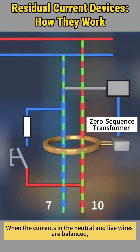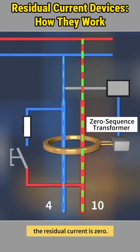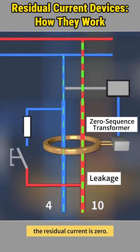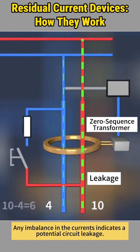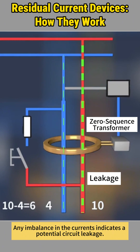When the currents in the neutral and live wires are balanced, the residual current is zero. Any imbalance in the currents indicates a potential circuit leakage.